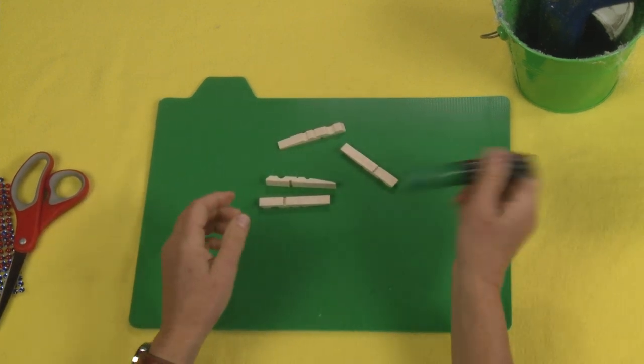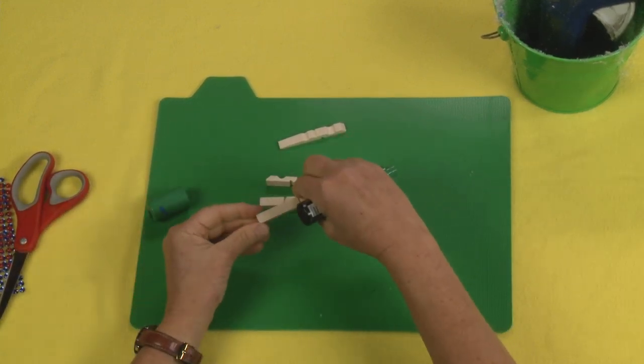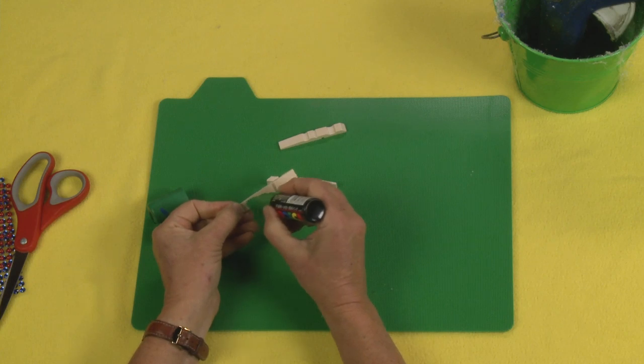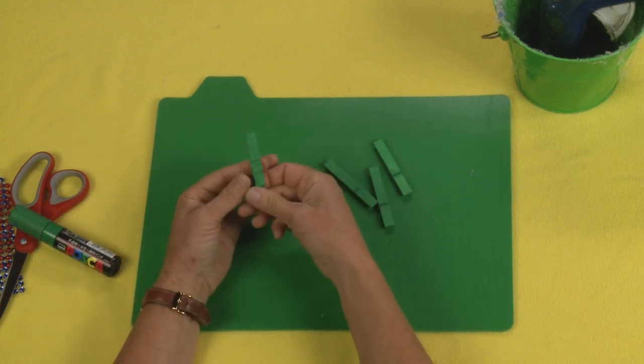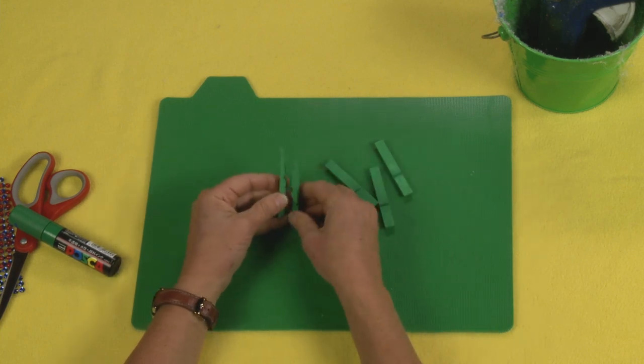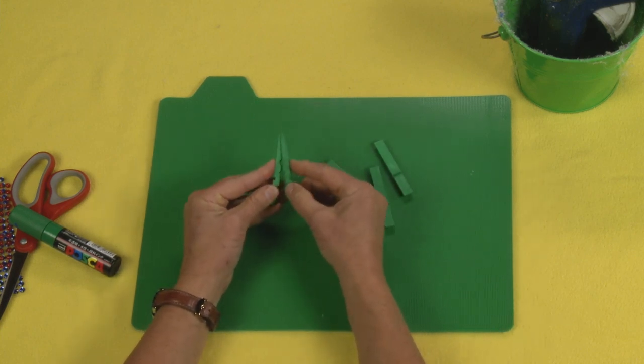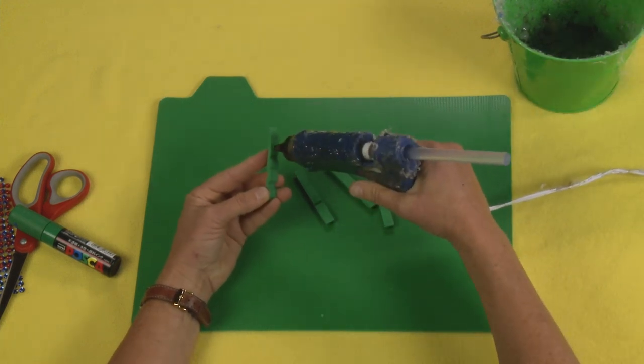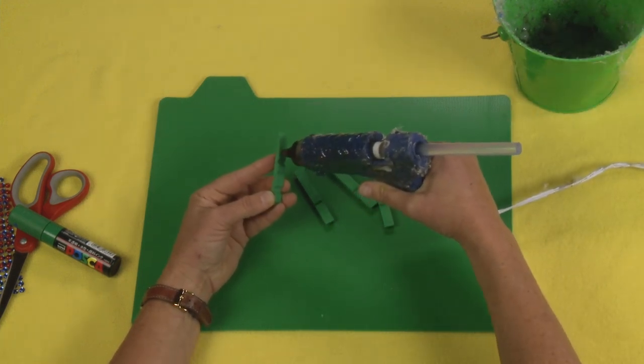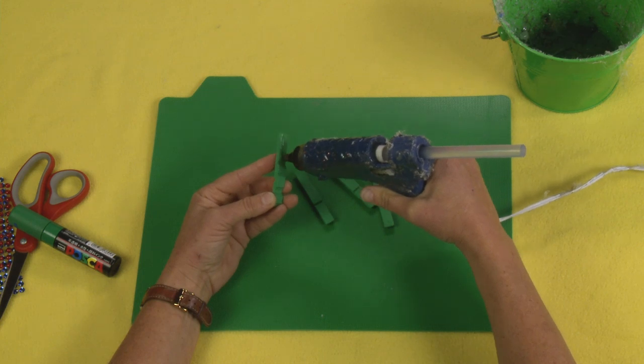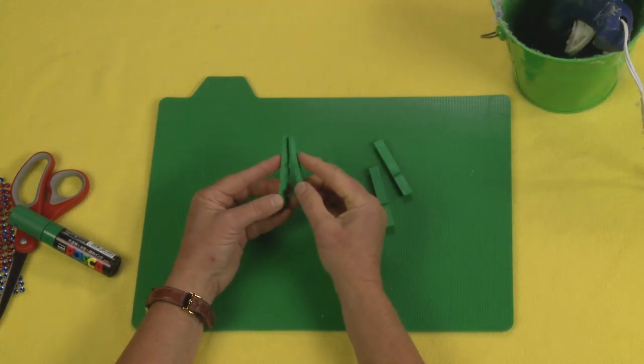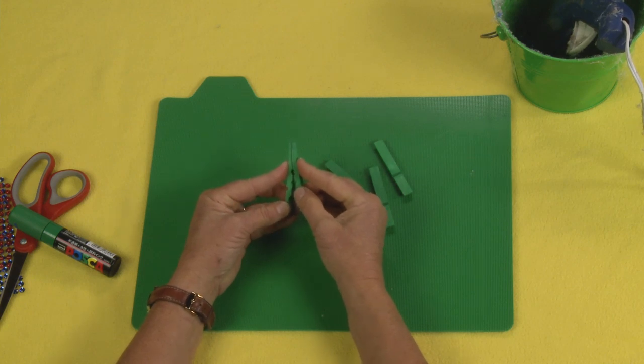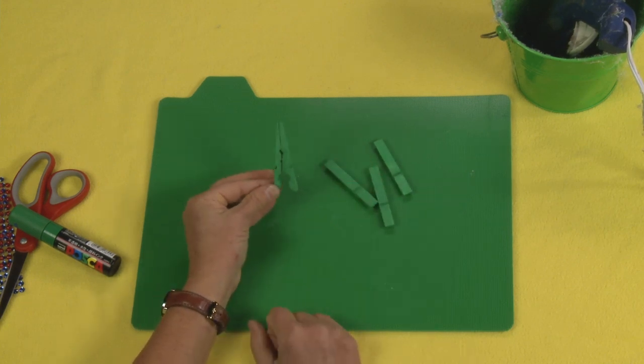Next you're going to use your Uni Posca pen and you're just going to paint the entire clothespin. And the next thing you're going to do is take your hot glue gun and glue the two ends together. So basically you're just flipping them from the normal way. Just put a little bit of glue on the flat, take the other side of the flat, and glue them together just like that.